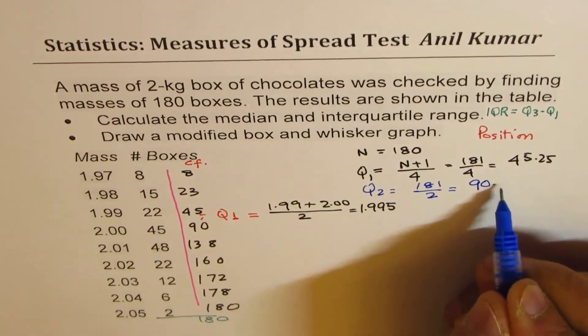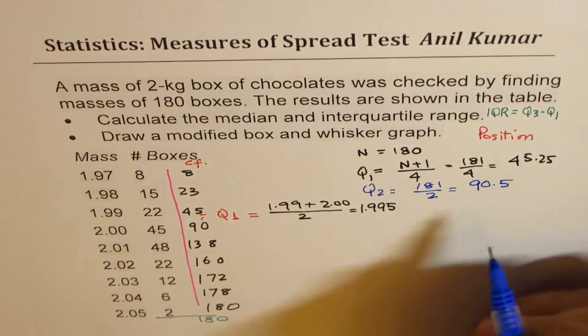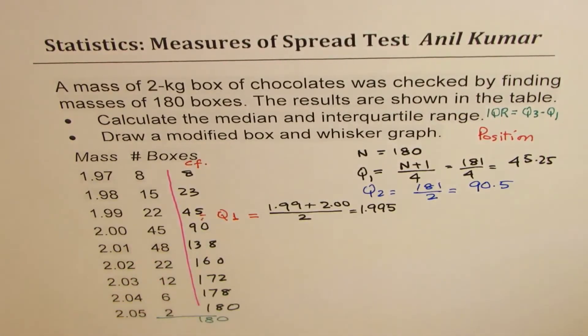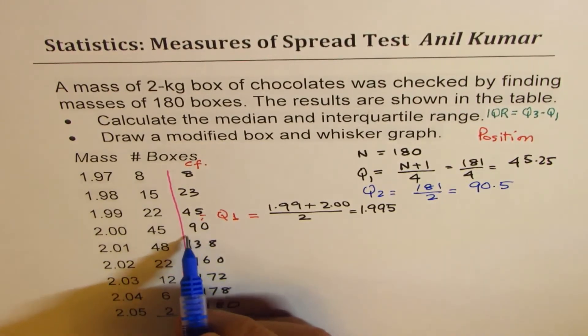So half of this will be 90.5. So 90.5 again for us will be in between this. This is 90 so it is here.